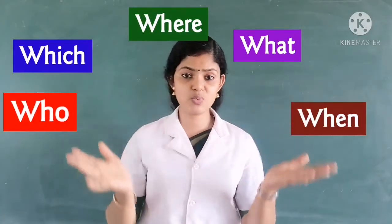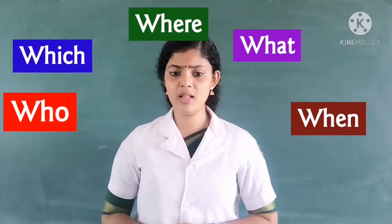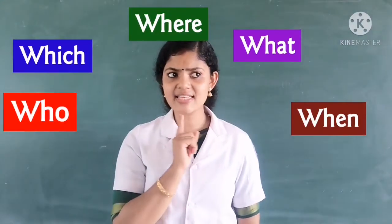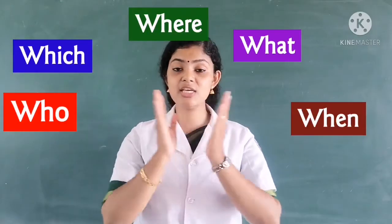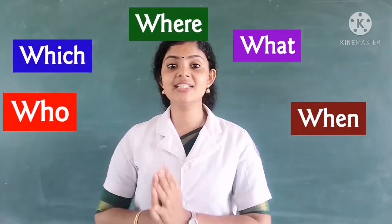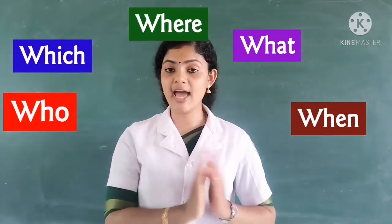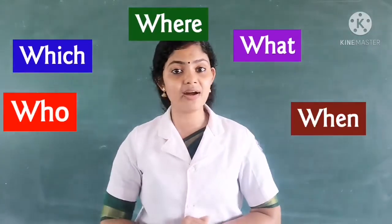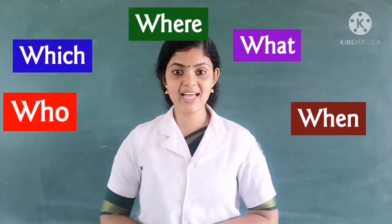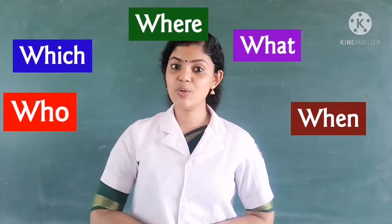We use these words to ask something — to make questions. For example: What is the time now? Where are you going? Who is that? Here we use these words to make questions, and these questions start with the letters WH. At the end of the sentence there will be a question mark, because they are questions. These words are known as WH question words.